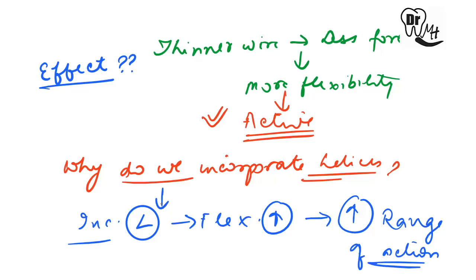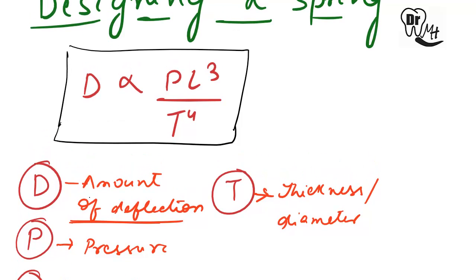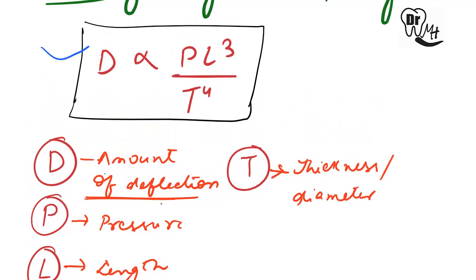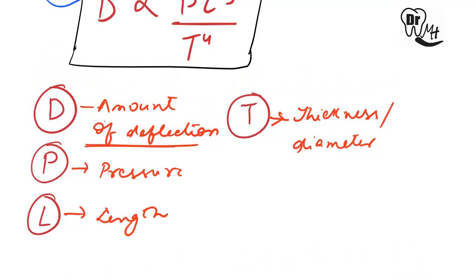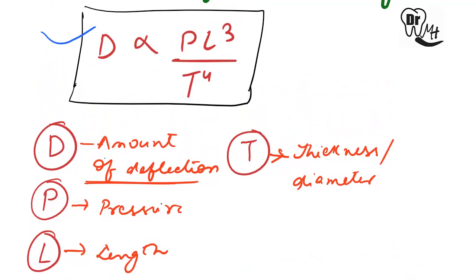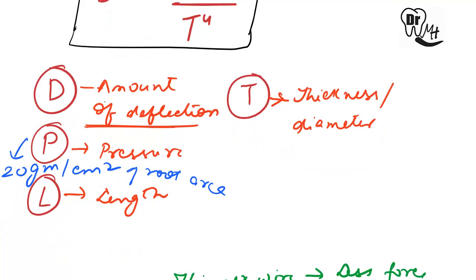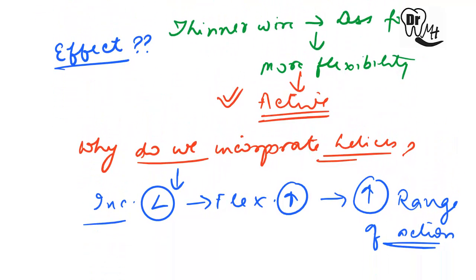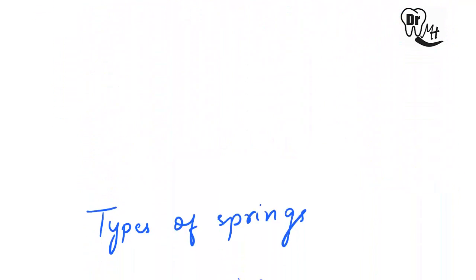We need helices to increase the range of action. The third factor is pressure. If we double the pressure, the deflection will also double. The pressure to be applied is on average 20 grams per centimeter square of the root area, and it can vary according to the number of teeth to be moved.